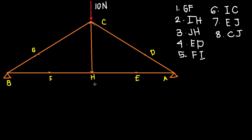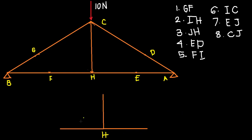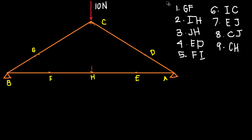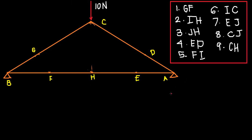Now we have a very simple figure compared to what we started with. Looking at what remains, we can identify our last zero force member at joint H. So our final zero force member is member CH.